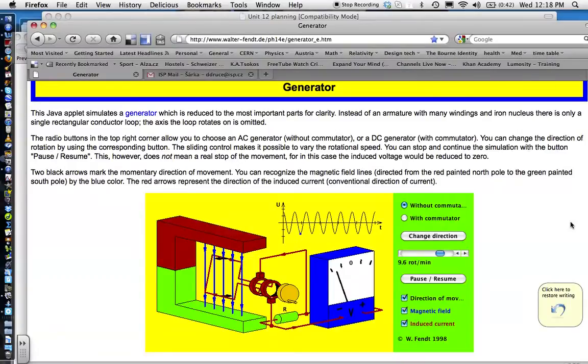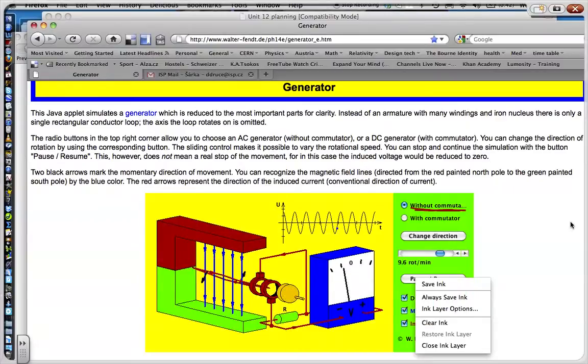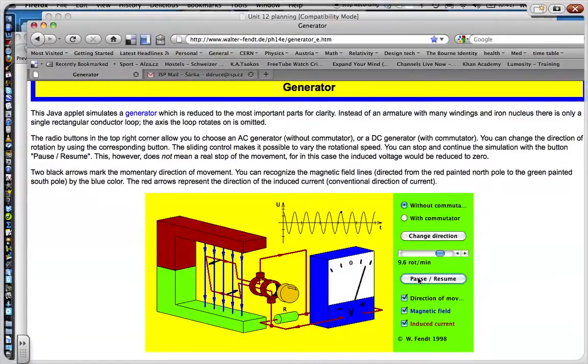So I want to continue using this application. Now you notice here we have this over here without commutator and this is what we have here and with commutator. Now the difference without commutator is that each of these wires, let me just pause the rotation for a moment. If you have a look here you see that each of these wires is actually sliding on a circular piece of metal. And so each wire is always attached to one of these circular pieces. I may be calling that one A and this one B. So it's always connected to one. And so even as it turns around,